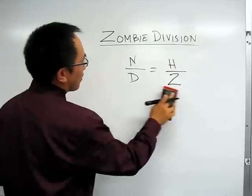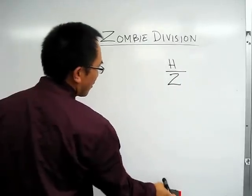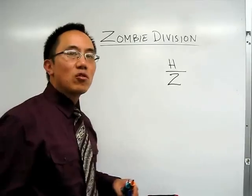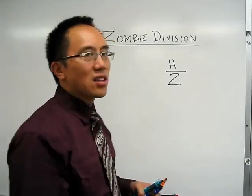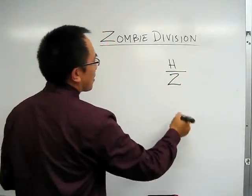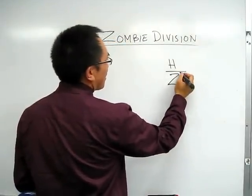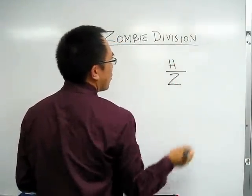And what happens with that human is that the zombie, of course, wants to consume the human. They want to divide the human. So if you see the zombie on the bottom, the zombie is trying to crawl up out of the ground and consume the human.